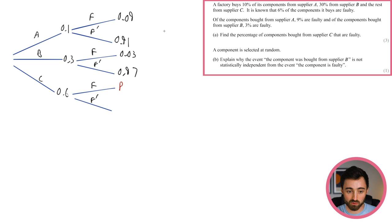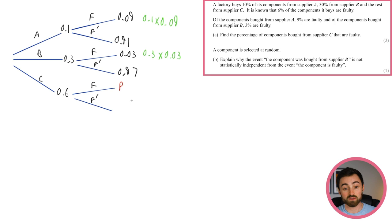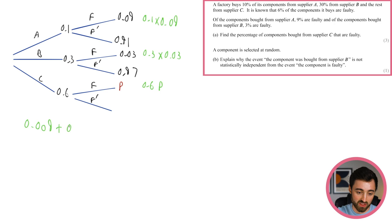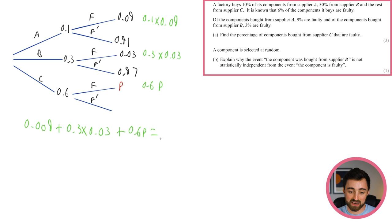To find the overall probability of a component being faulty, look at all the faulty branches. A and faulty is 0.1 times 0.09; B and faulty is 0.3 times 0.03; C and faulty is 0.6 times p. Add all of these up and set them equal to the known total of 6% or 0.06. That gives an equation for p.